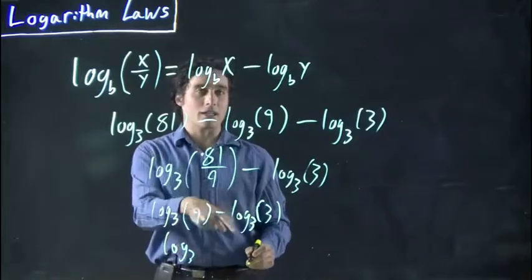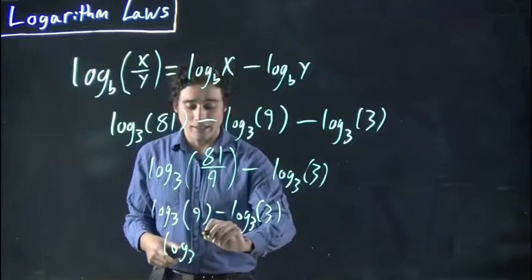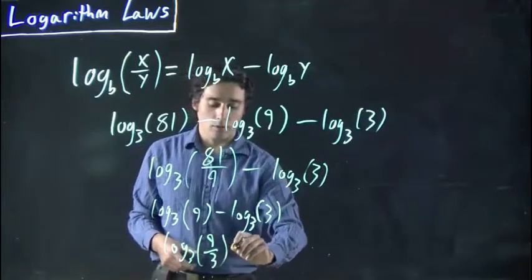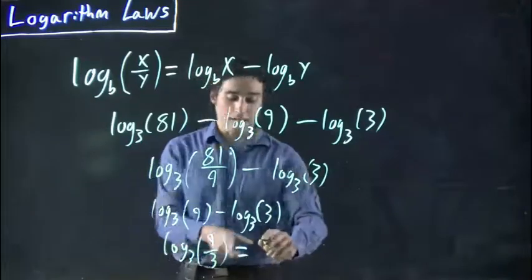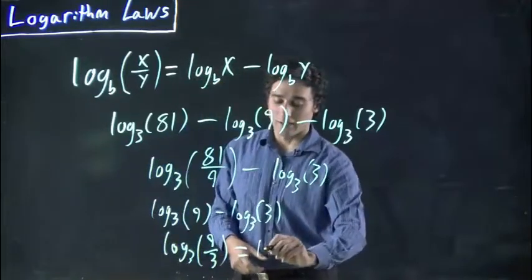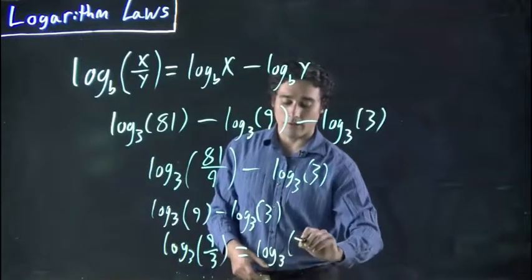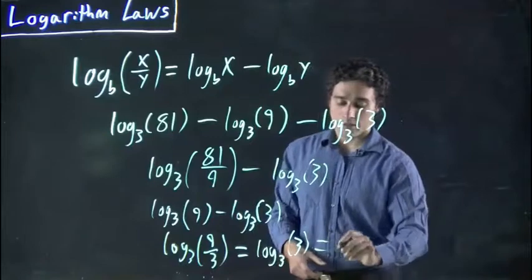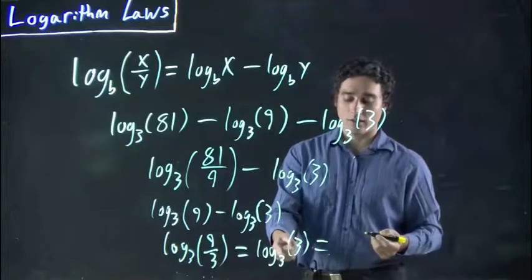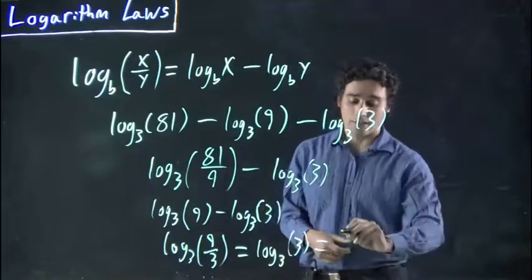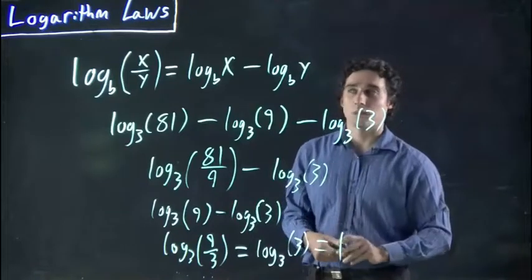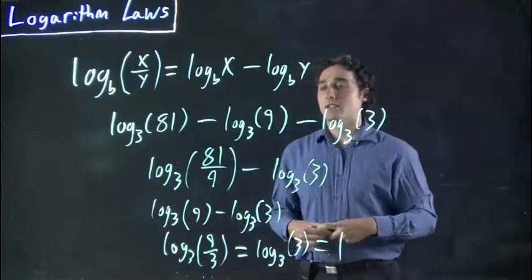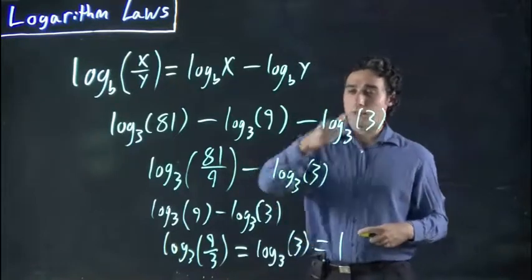This same thing again. We're applying the quotient rule twice. This is 9 over 3, which I'm just going to start writing equal signs and writing it on this last line. This is log to the base 3 of 3. It's quite a squeaky marker. Again, log 3 to the power of what equals 3? 1. So this is a nice example of how this can be used to simplify things. You wouldn't often go the other way.